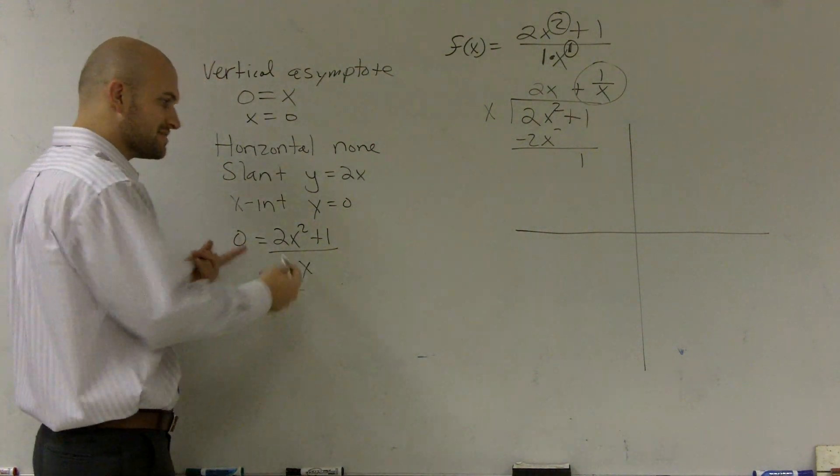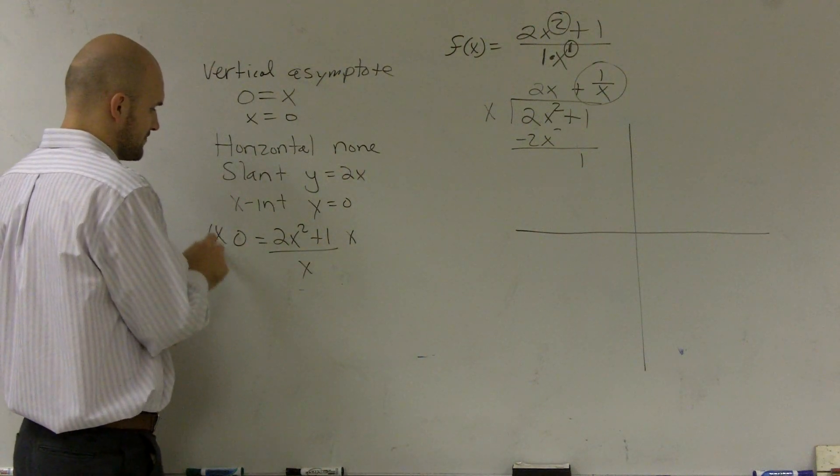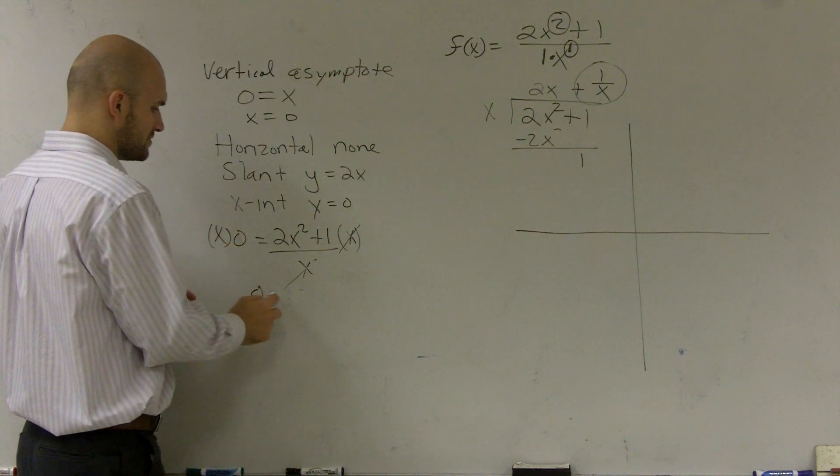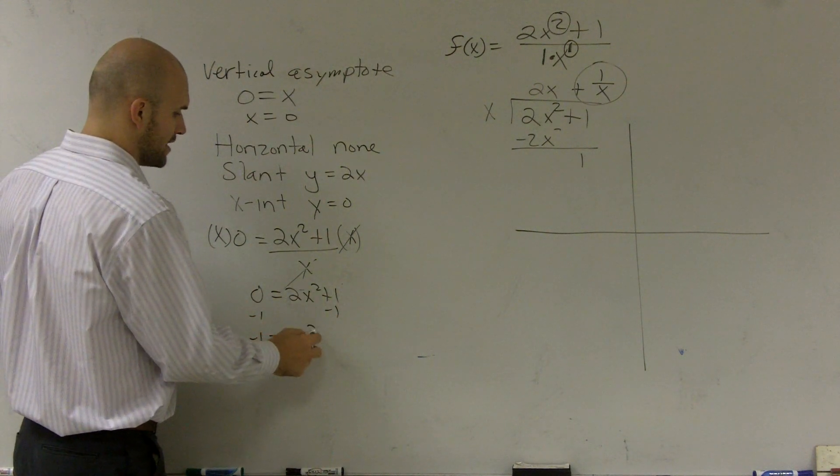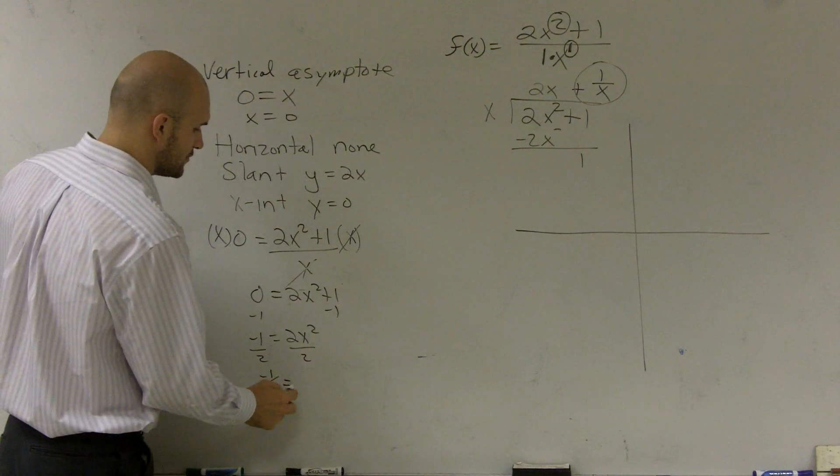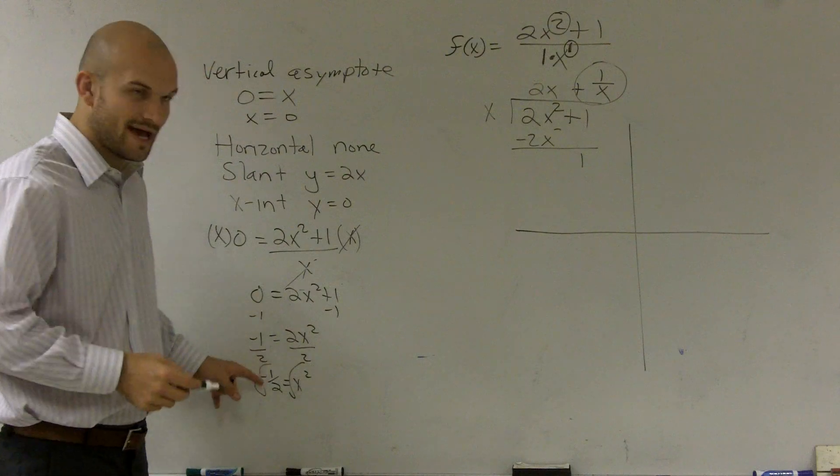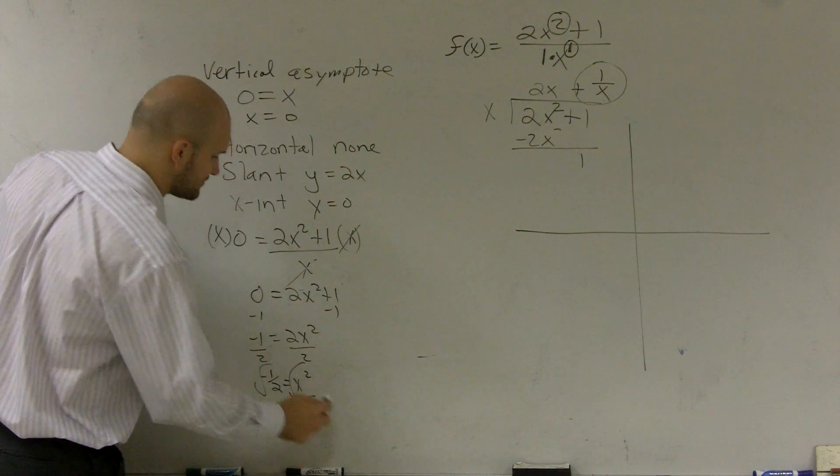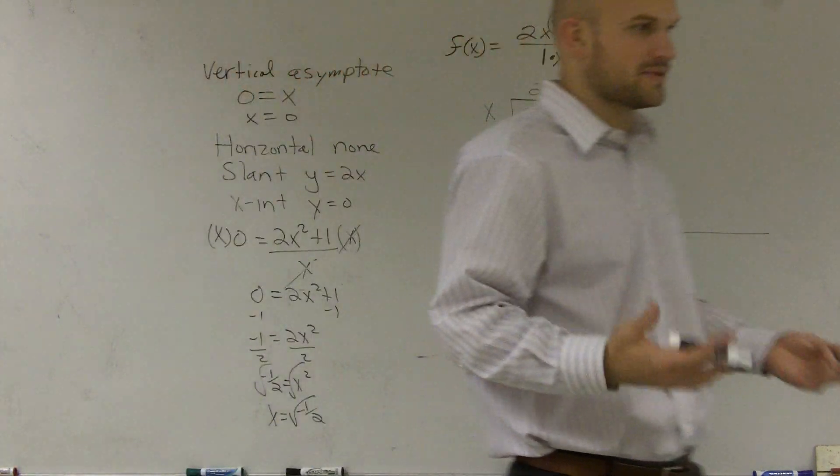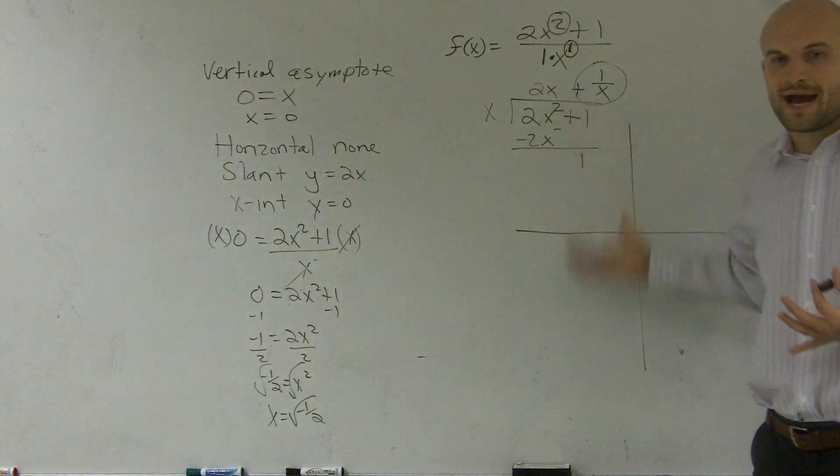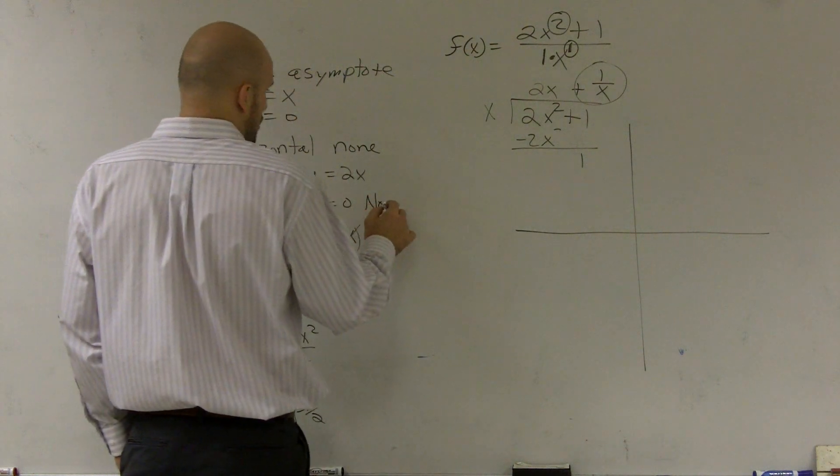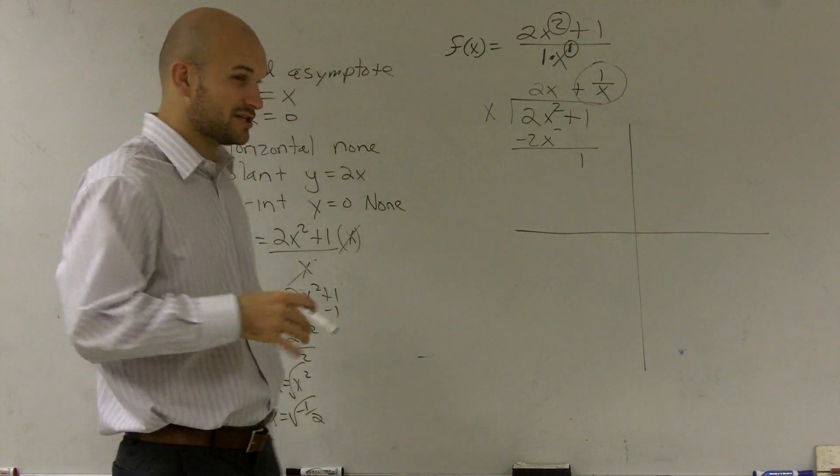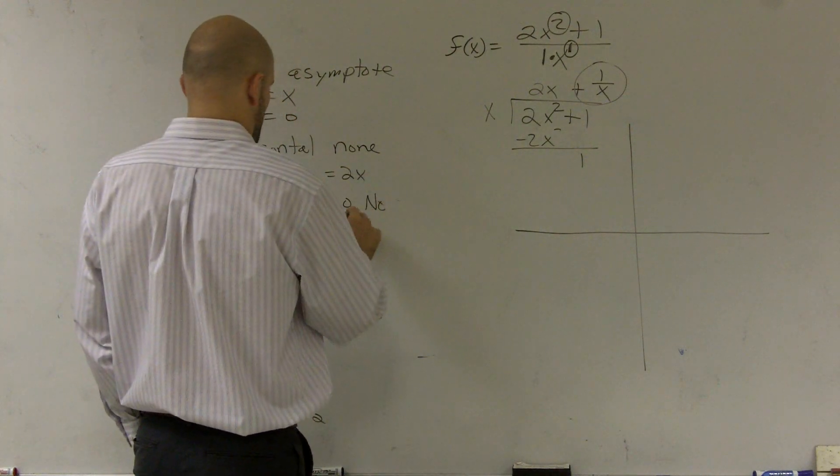So now I need to solve for x. Well, since x is on the bottom, to get rid of that, I need to multiply by x on both sides. Well, these x's cancel out. That becomes 0. 0 equals 2x squared plus 1. Subtract the 1. Negative 1 equals 2x squared. Divide by 2. Negative 1 half equals x squared. Square root. And what I notice is x is equal to the square root of a negative 1 half. You can't take the square root of negative 1 half. Unless we're going to start dealing with complex numbers. But still, complex numbers we don't graph on our regular Cartesian coordinate. So, therefore, there is no x intercept.